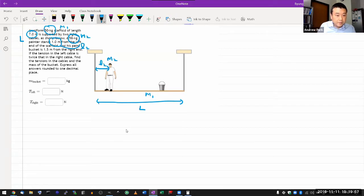So let me call that L2. From the left hand of the scaffold, its paint bucket is 1.5 meters from the right end. Let me call this L3. If the tension in the left cable, let's call that TL, is twice that in the right cable, call that TR. Find the tension in the cables and the mass of the bucket. So it's a quite complicated scenario. And it's a complicated scenario like this where standard strategy excels.